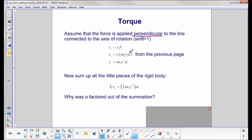We know what F i is from the previous page, M i R sub i alpha, and then you multiply R i times R i and you get R i squared. So we have that little piece of mass, the torque on that little piece due to the rotation. Let's sum up all those little pieces.